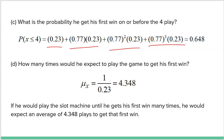The final question asks for the expected value — how many times would Frank expect to play to get his first win? Remember, expected value is the same as the mean. The formula is simply 1 divided by P: 1 ÷ 0.23 ≈ 4.348. Yes, you can't play 4.348 times — it's a mean, just like an average points-per-game stat. It means if Frank repeated this process many times, the average number of plays until his first win would be 4.348.